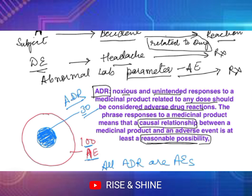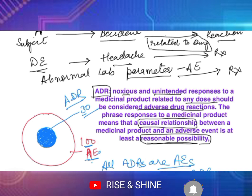So all ADRs are AEs, because ADR is within the AE circle — that's why I've drawn it that way. But all AEs are not ADRs. Remember this: it is asked very often. All ADRs are AEs, but all AEs are not ADRs. Anything which happens, big or small, in a clinical trial — if it is related to the drug, it is a reaction; otherwise it is an event.